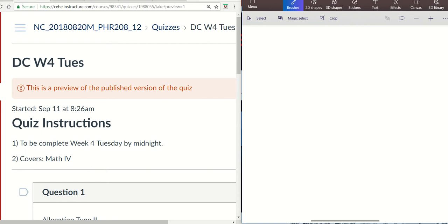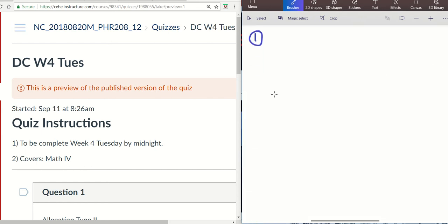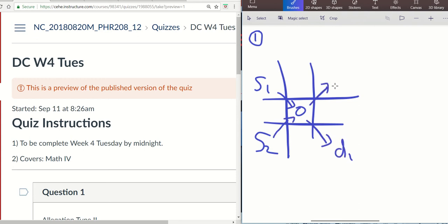So Monday's DC was Allegation Type 1. A quick refresh with Allegation Type 1: you put the order in the middle, Supply 1 here, Supply 2 here. You find the difference—I'll call this Difference 1. Find the difference here, Difference 2, and then you divide by D1 plus D2. There's always two supplies. Make sure if it's NS, you know the strength of NS, and if it's D5, you know the strength.